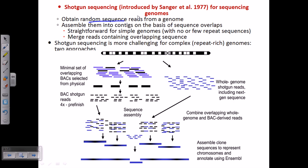Shotgun Sequencing can be used for large sequences and long DNA regions — that is the advantage of Shotgun Sequencing over Sanger Sequencing. However, it is more challenging for complex genomes. What we need to do is use restriction enzymes to cleave our DNA strands into small segments, just like a shotgun fires and shatters things into small pieces.